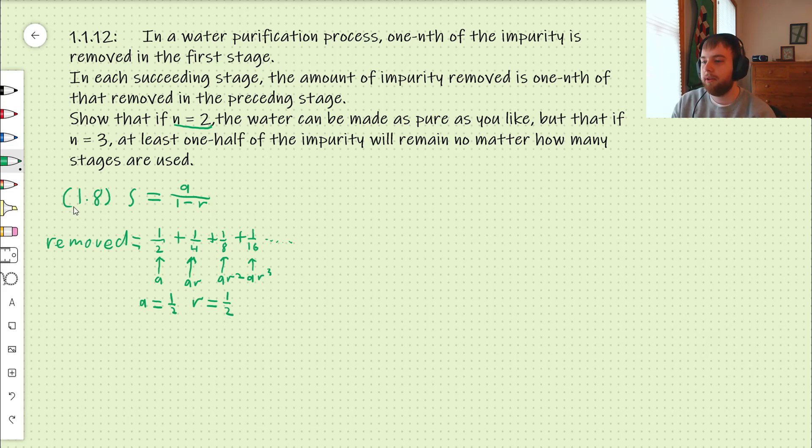So, if we use formula 1.8 from the book, we get the result that the overall sum of the entire series from here out to infinity is 1 half over 1 minus 1 half. Of course, that's a half over 1 half, which is 1.